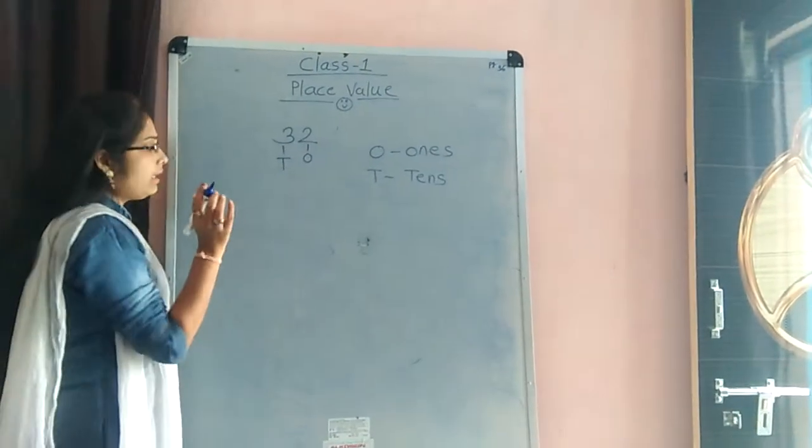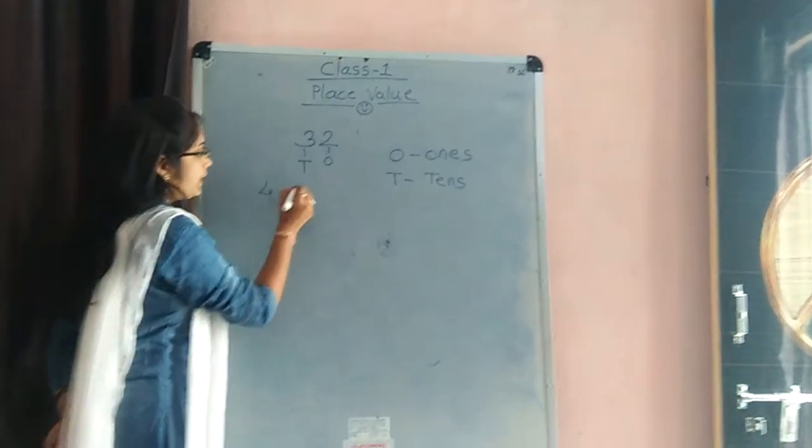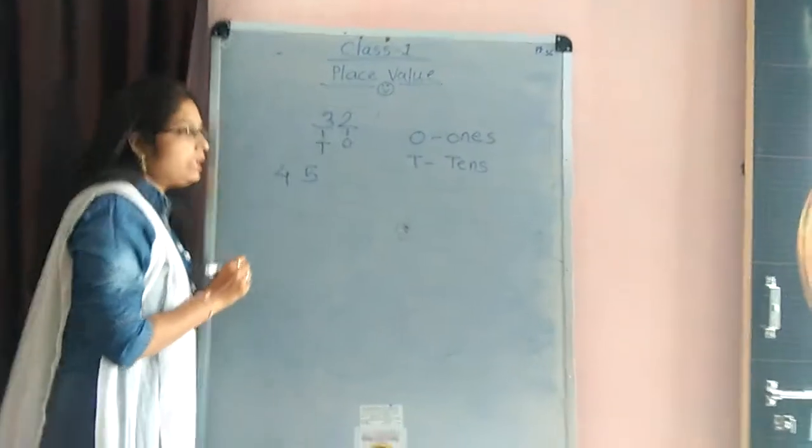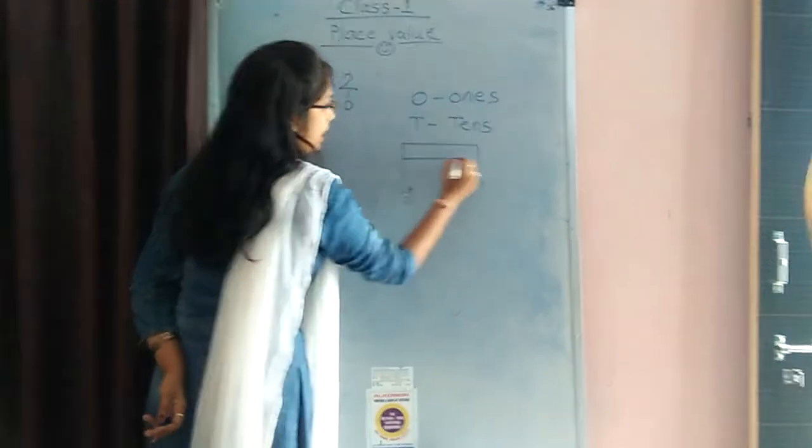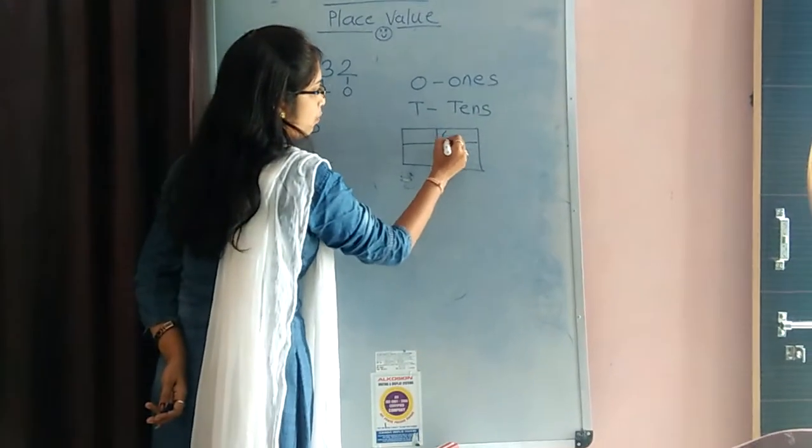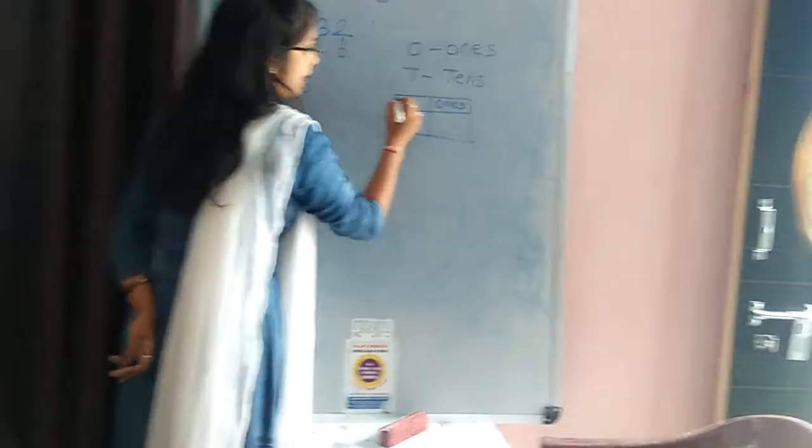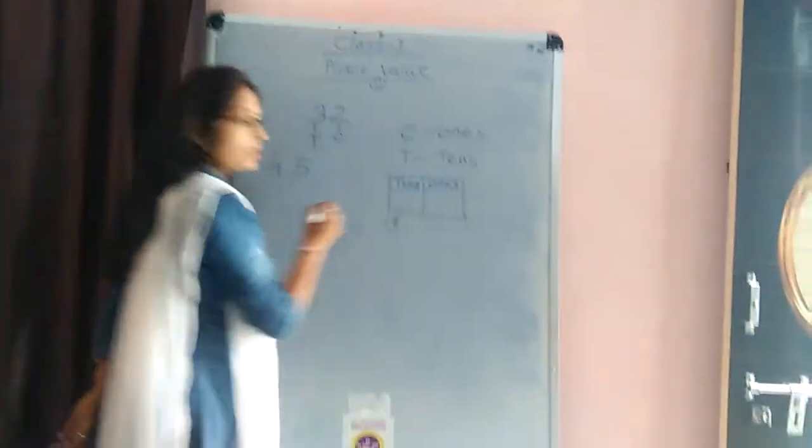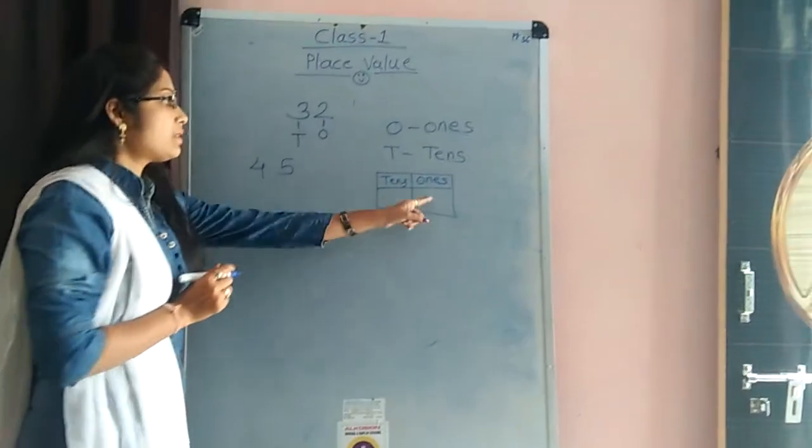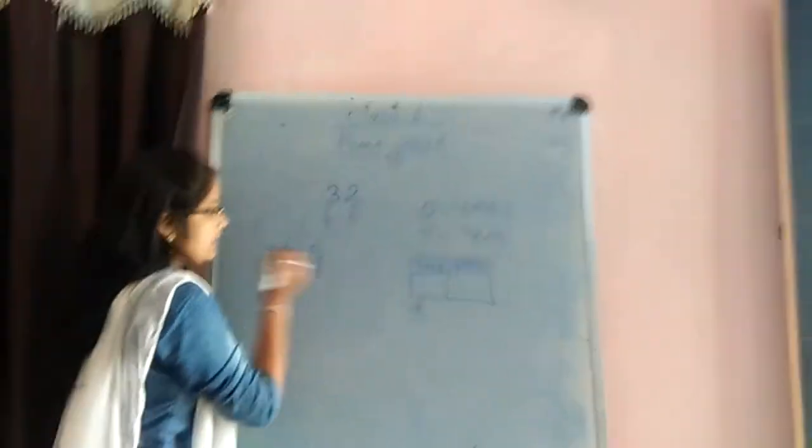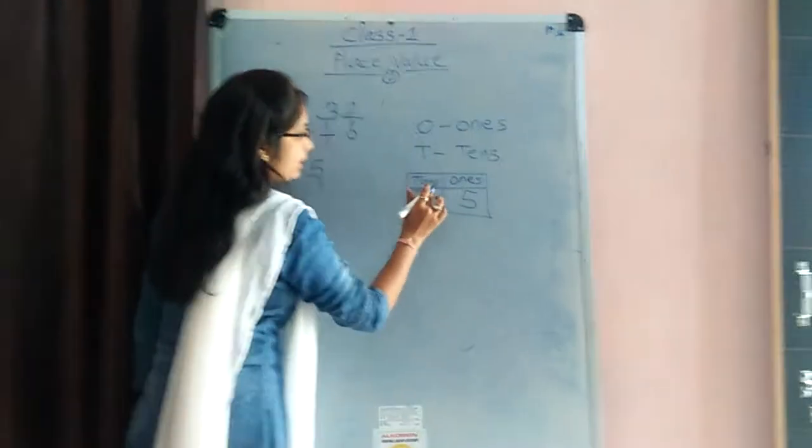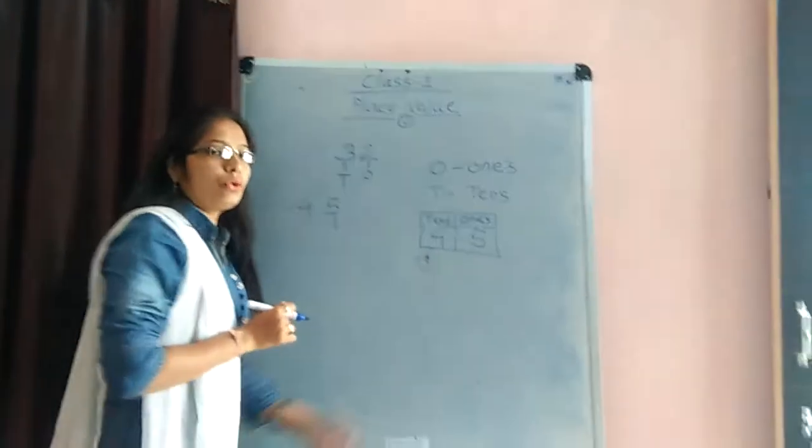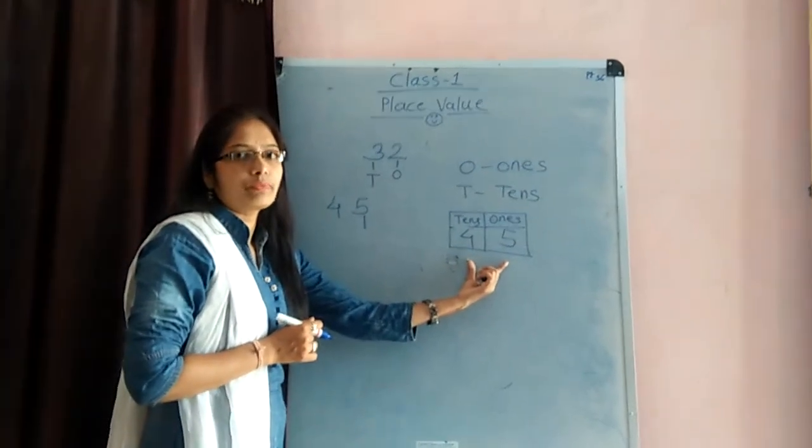Here I write again one number that is the 45. If here I write chart or here I draw one chart that is the 1s and 10s. 1s and 10s. So, here I write one number 45. So, 5 is in 1s place and 4 is in 10s place. So, this is the 45. Understand?